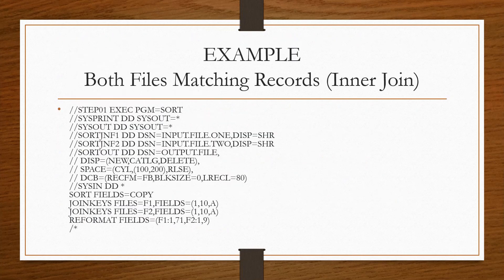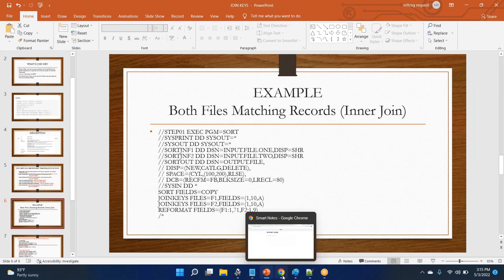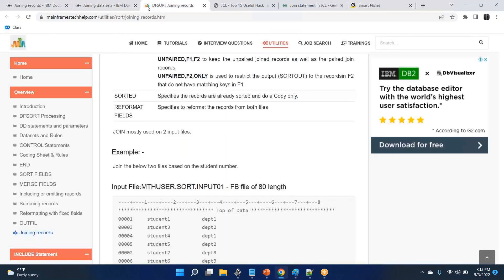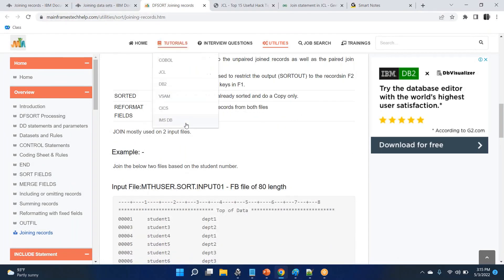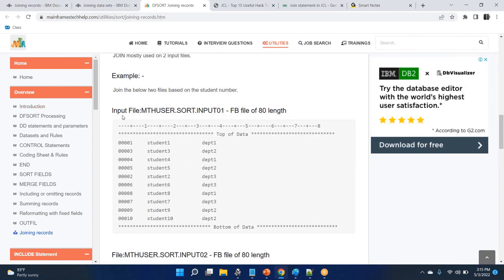Now we will do hands-on starting with inner join. The syntax: JOINKEYS FILES=F1, FIELDS specifies the common field; JOINKEYS FILES=F2, FIELDS. Let me create an input file - I'll take a sample input file based on this data. You can see this article. I'll take this particular data for hands-on practice.